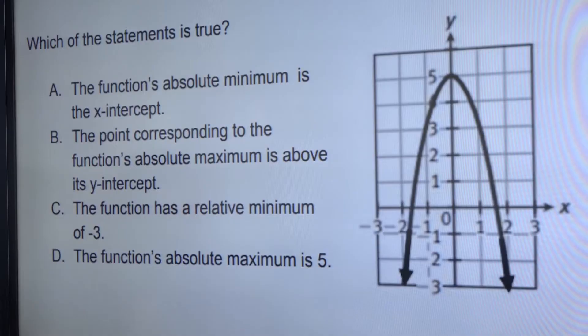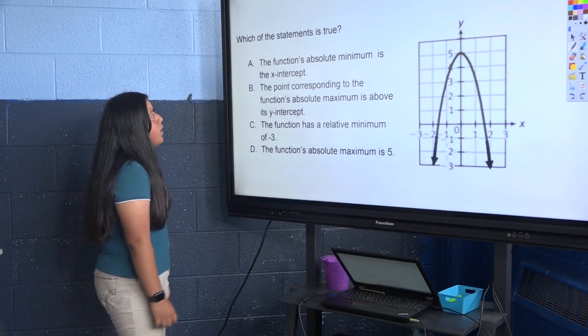A. The function's absolute minimum is the x-intercept. B. The point corresponding to the function's absolute maximum is above its y-intercept. C. The function has a relative minimum of negative 3. D. The function's absolute maximum is 5. So let's look at A.